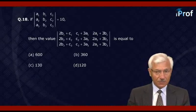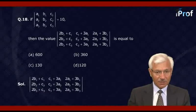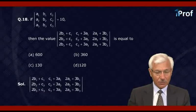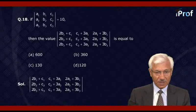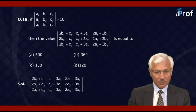The given determinant has first column 2B1+C1, 2B2+C2, 2B3+C3; second column C1+3A1, C2+3A2, C3+3A3; and last column 2A1+3B1, 2A2+3B2, 2A3+3B3.